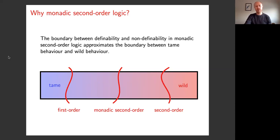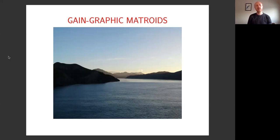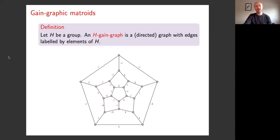I'm going to spend the rest of the talk talking about gain graphic matroids. I won't assume any knowledge of gain graphic matroids — I'll spend a bit of time introducing them. A way of thinking about gain graphic matroids is that gain graphic matroids are to groups as representable matroids are to fields. In some sense, the elements in a gain graphic matroid are being given coordinates with elements from a group, roughly the same way that elements of a representable matroid are given coordinates with numbers from a field.